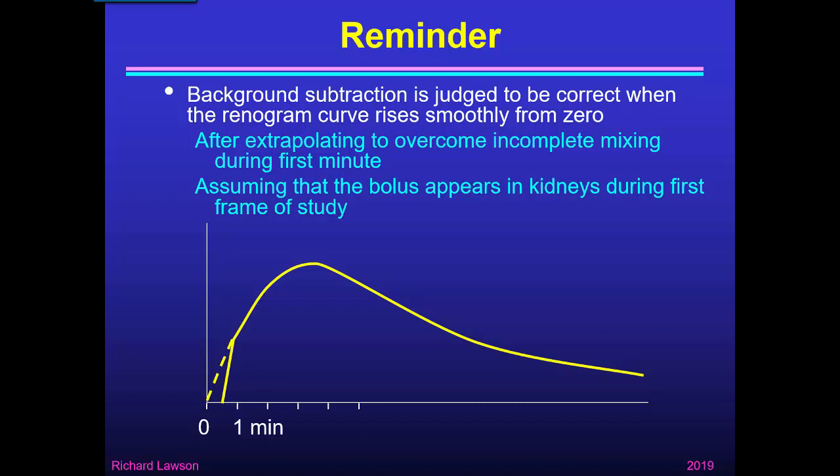Just a reminder of what we learned in part two. Background subtraction is judged to be correct when the renogram curve rises smoothly from zero. We may have to extrapolate to overcome incomplete mixing during the first minute, and this assumes that the bolus appears in the kidneys during the first frame of the study. If you're not sure about this, go back to part two and review what I said there.